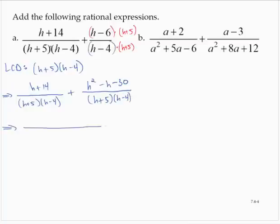Now we can add the numerators. So I'd have (h + 14) + (h² − h − 30) over the common denominator (h + 5)(h − 4).